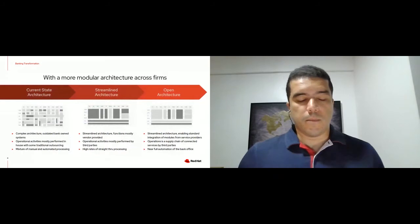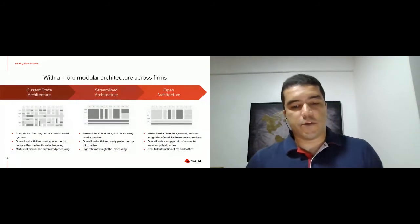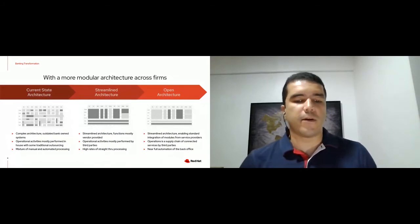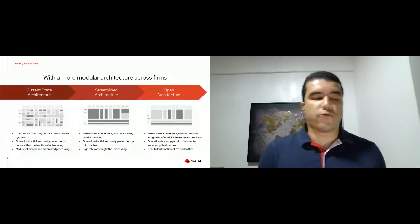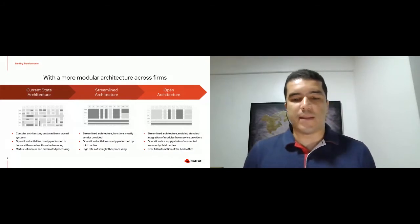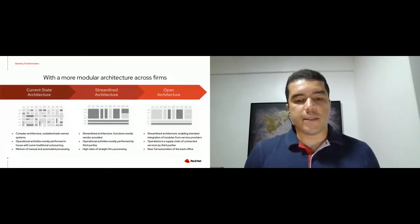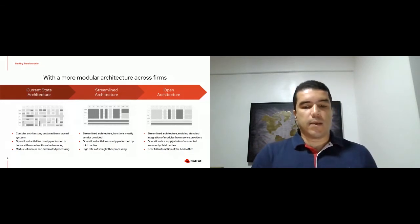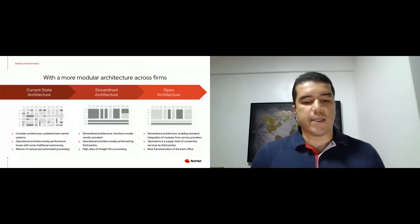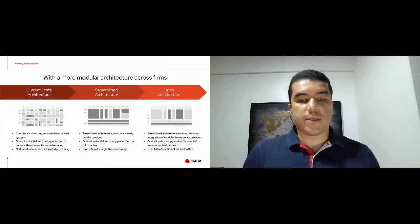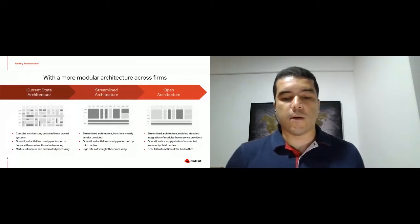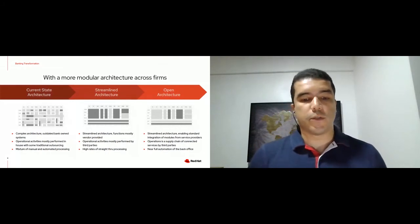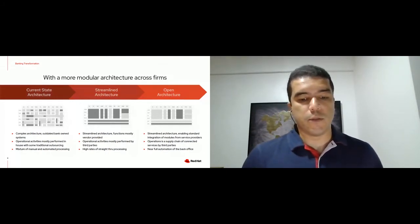Openness will be a defining characteristic of the technology and culture driving success in the core. These pictures show the level of interdependency and modularity of core banking business capabilities in the as-is state, but also the possibilities of the future state. It's a matrix of different lines of business crossed with the supporting organizational structure — the departments and business units.